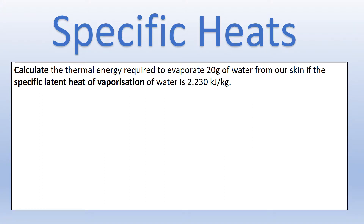The first thing I want to do is calculate the thermal energy required to evaporate 20 grams of water from our skin, and it gives us the latent heat of vaporization. There are two things to draw your attention to: first, it says evaporate, which means we don't need to supply energy to get it to its boiling point because it can evaporate at any temperature. The other thing is the mass is given as 20 grams, but our latent heat of vaporization is given in kilojoules per kilogram, so we're going to have to deal with that conversion.